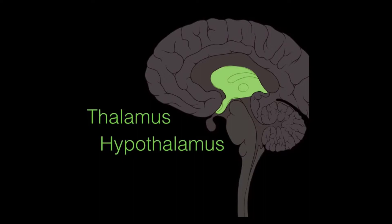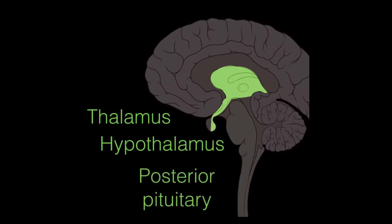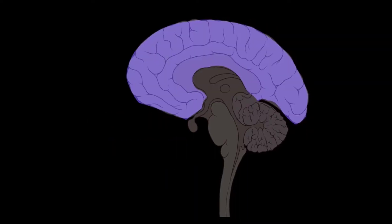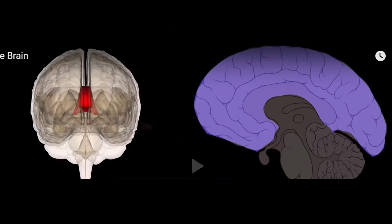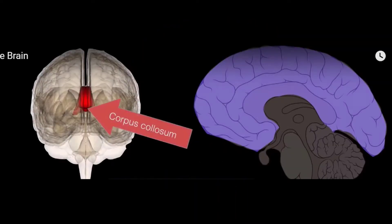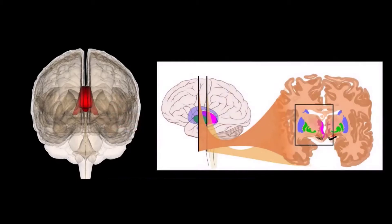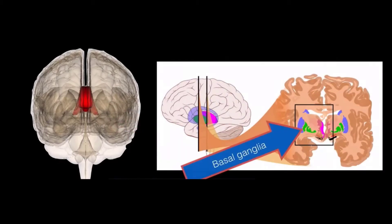Then comes the thalamus, hypothalamus, and posterior pituitary gland. The cerebrum is the biggest part of the brain, separated into two hemispheres by the corpus callosum, and consists of the basal ganglia.